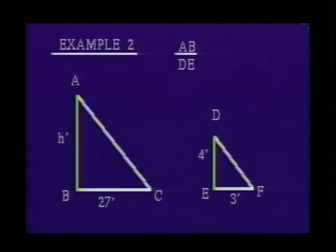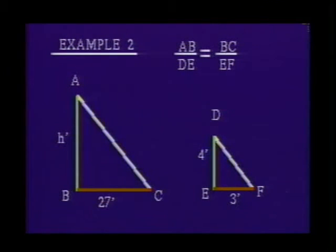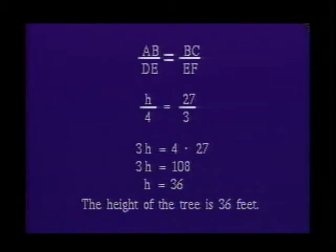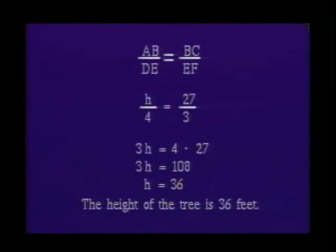The side of triangle ABC representing the height of the tree is to the side of triangle DEF representing the height of the post, as the side of triangle ABC representing the shadow of the tree is to the side of triangle DEF representing the shadow of the post. From this, we write the proportion: H is to 4 as 27 is to 3. Solving, we get 3H = 4 × 27, so H = 36. Therefore, the height of the tree is 36 feet.